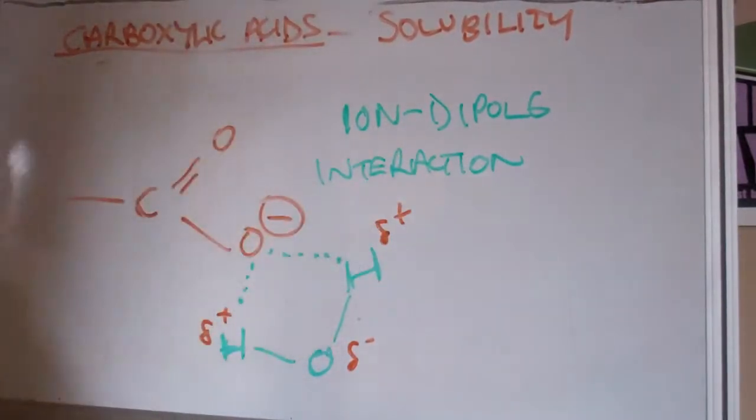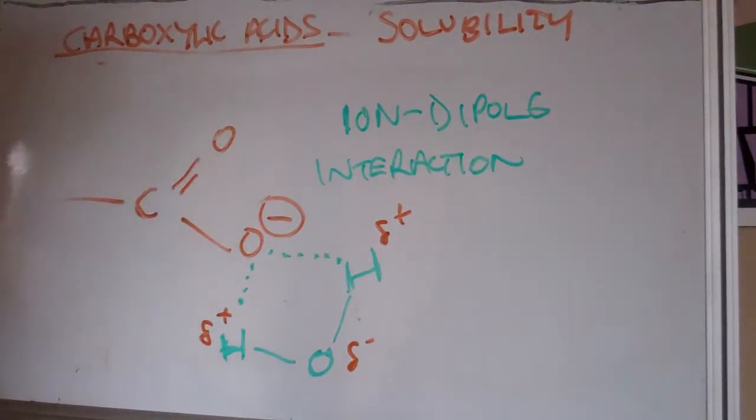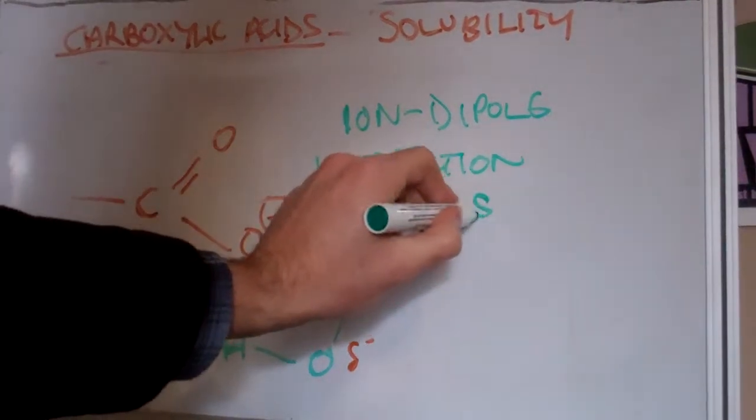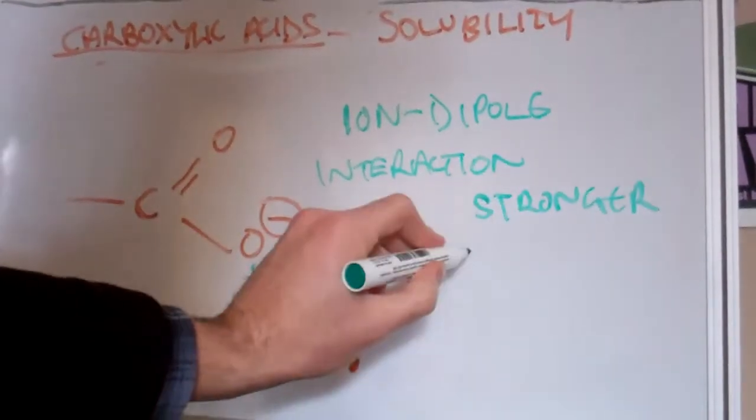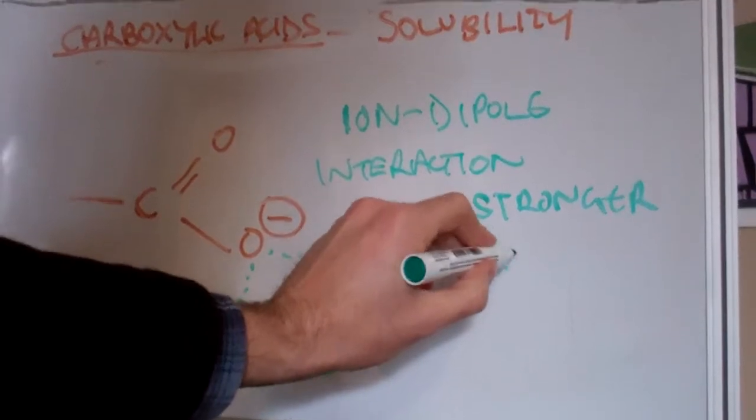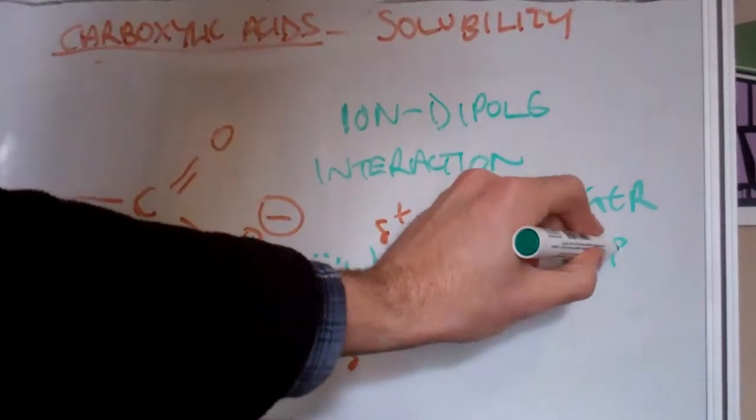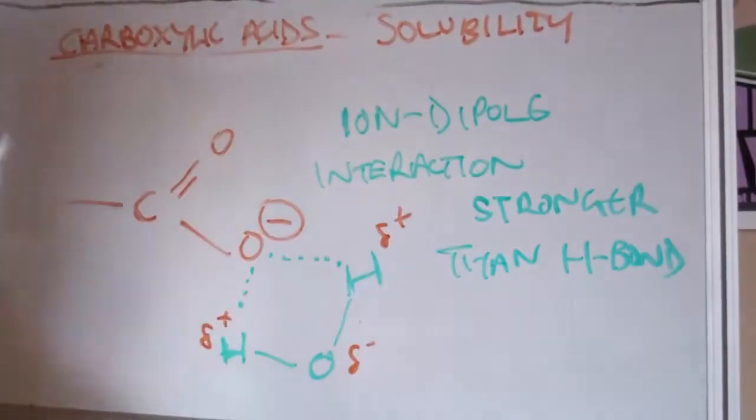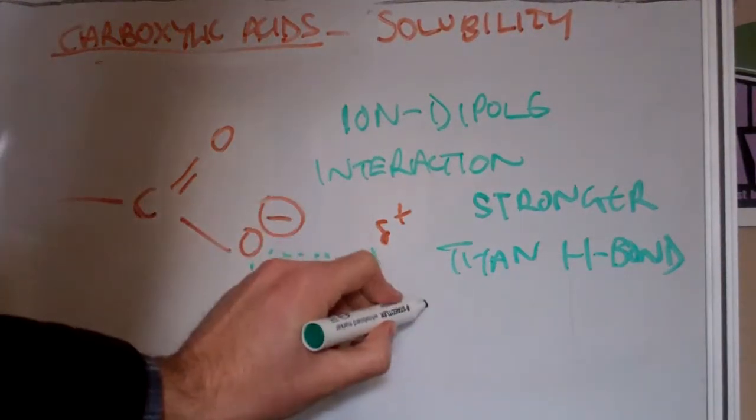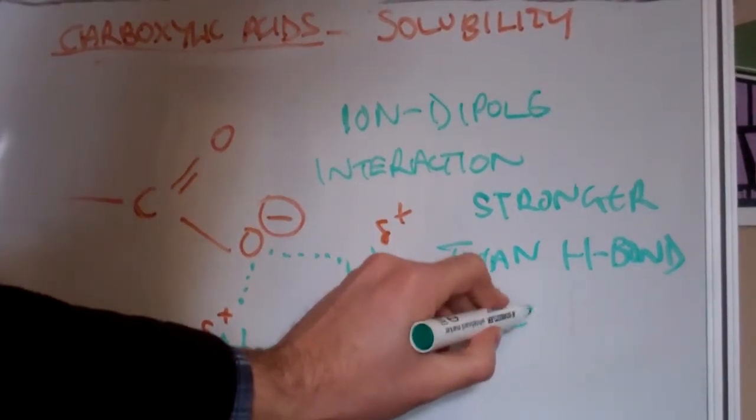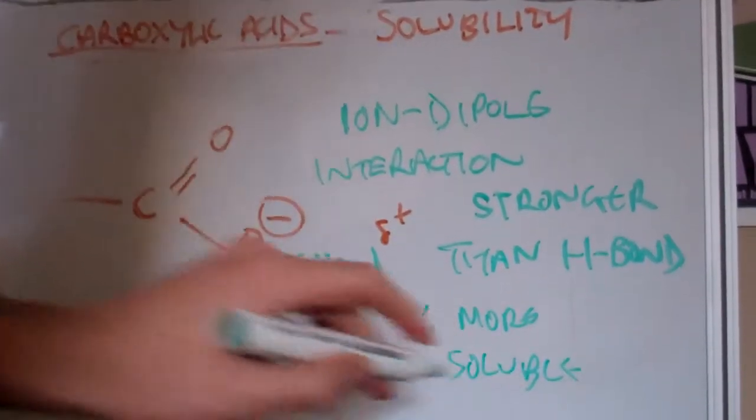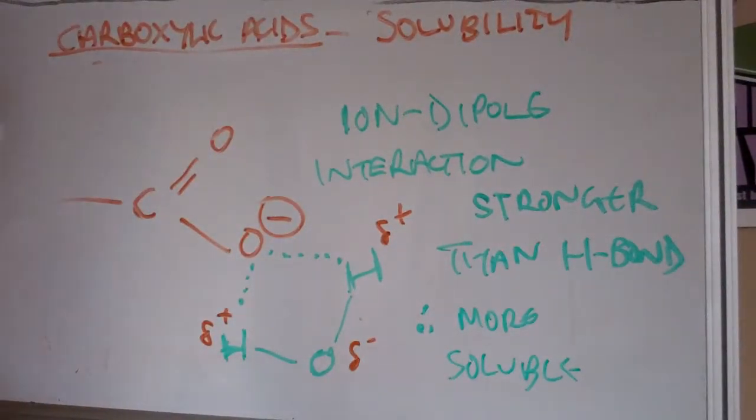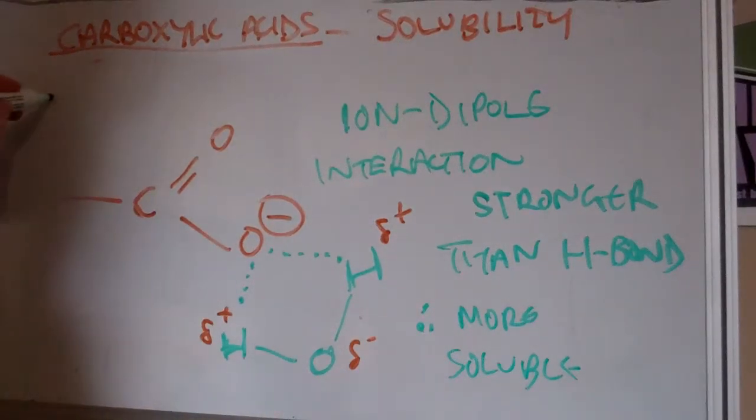Now these interactions are stronger than hydrogen interactions. Therefore, more soluble. So this is the carboxylate ion.